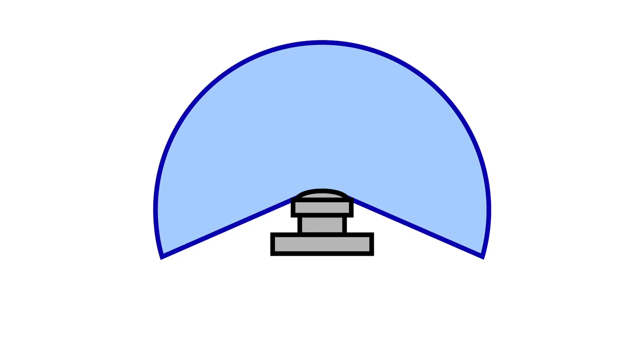Most fisheye lenses have a 180 degree angle of view, but there are fisheye lenses with an even bigger angle of view, effectively looking slightly behind the camera.